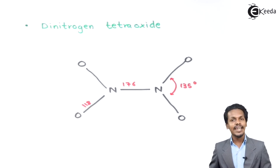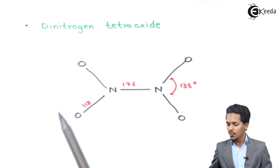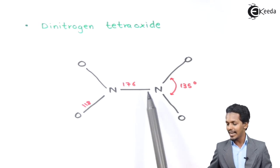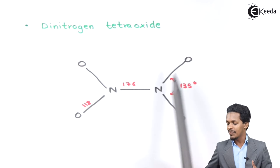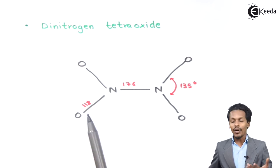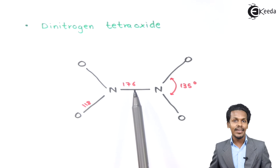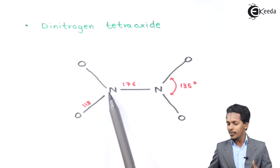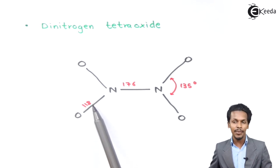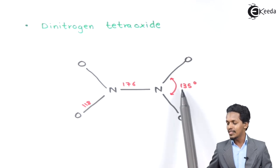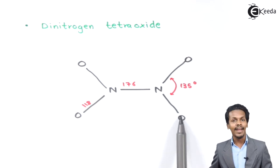The next is Dinitrogen Tetroxide. In this case, Nitrogen is attached to two Oxygen atoms, which is linked to another group having the same arrangement — Nitrogen attached to two Oxygen atoms. The bond length between the two Nitrogen atoms is 176 picometers, the bond length between Nitrogen and Oxygen is 118 picometers, and the O–N–O bond angle is 135 degrees.